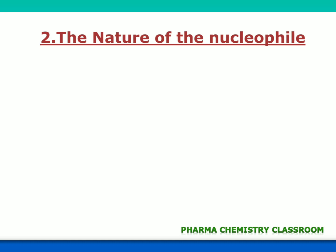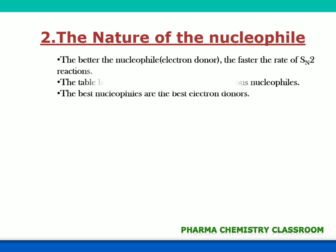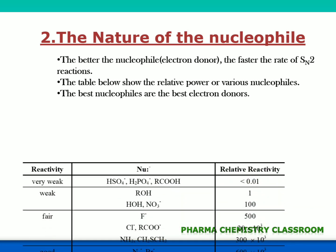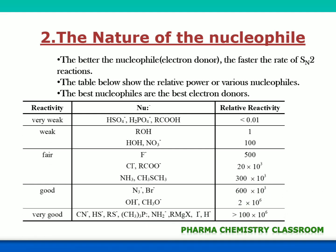Next, how does the nature of the nucleophile affect the rate of SN2 reaction? A nucleophile is an electron donor — the better the nucleophile, the better the SN2 reaction. You can see a table showing the reactivity of nucleophiles. Strong acids like HSO₄⁻, H₂PO₄⁻, and organic acids are very weak nucleophiles. Alcohols and water are also weaker. Further down you can see CN⁻, HS⁻, and OH⁻ are very good nucleophiles. The more easily a nucleophile donates electrons, the faster the SN2 reaction takes place.